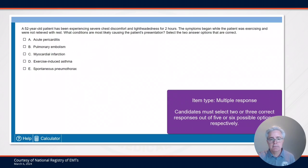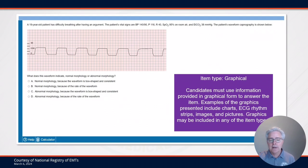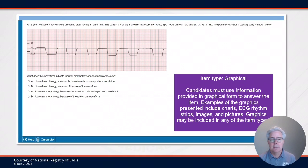If two answers are asked, then there are five options. Graphics are also used on National Registry examinations. These graphics include cardiac rhythms, capnography tracings, images, and pictures. These items can be associated with any item type.